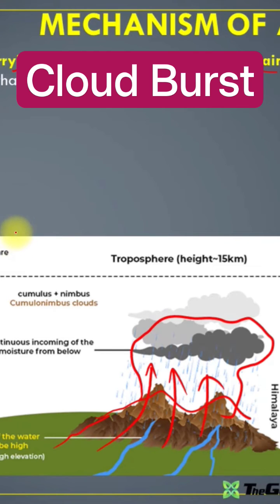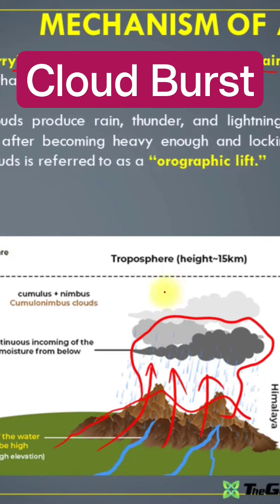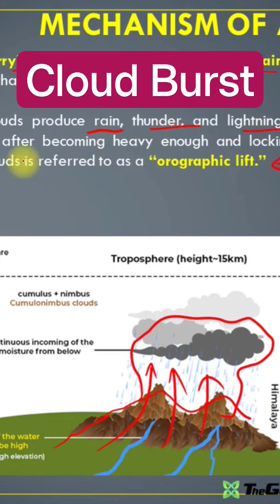It's a huge buildup. So the key term here is orographic uplift. These clouds produce rain, thunder, lightning, sometimes even hail, and they definitely generate a lot of flash floods.